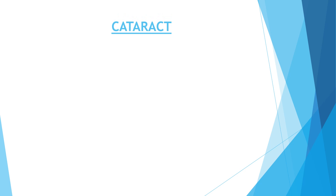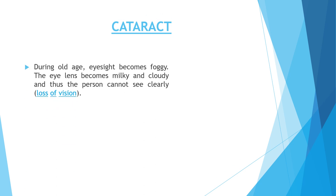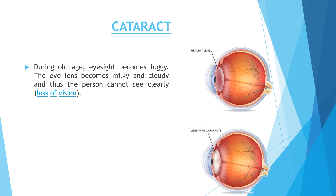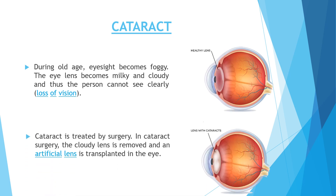Number 3: Cataract. During old age, eyesight becomes foggy. The eye lens becomes milky and cloudy, and the person cannot see clearly — this is called loss of vision. You may have observed your grandparents complaining that they are not able to see clearly; that may be cataract. Cataract is treated by surgery, in which the cloudy lens is removed and an artificial lens is transplanted in the eye.